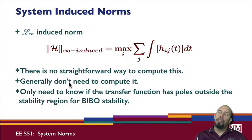In general there is no straightforward way to compute it. But generally we don't need to compute it. We only need to know if the transfer function has poles outside the stability region for BIBO stability.